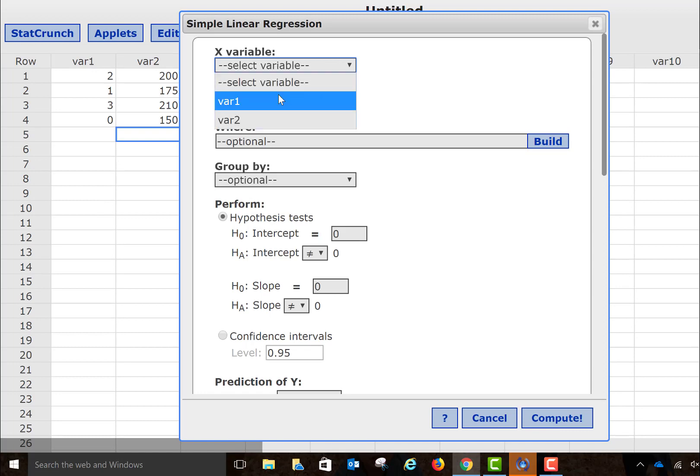It's going to ask me for my x variable, it's going to ask me for my y variable, and then I just need to come down here, and I need to make sure that my null hypothesis for the slope is still set equal to zero, and that the alternative hypothesis for my slope is not equal to zero, because that's what I had for my original null and alternative hypothesis.